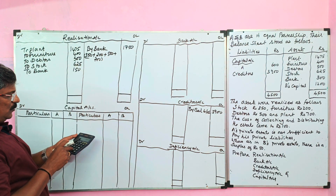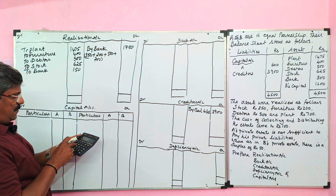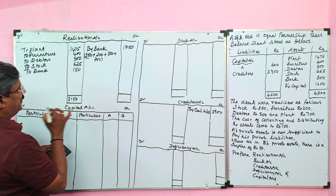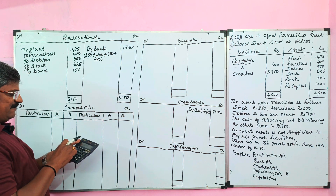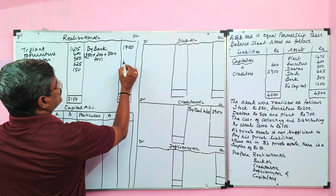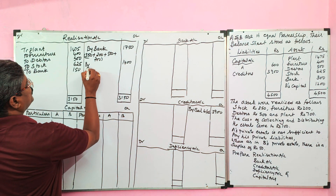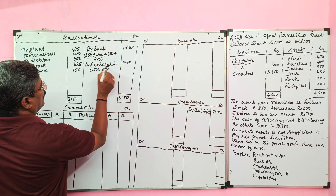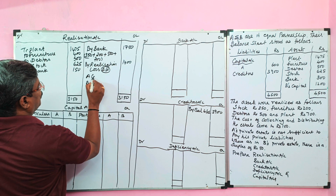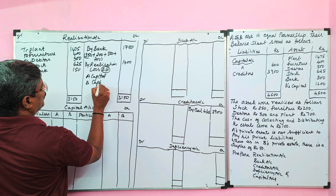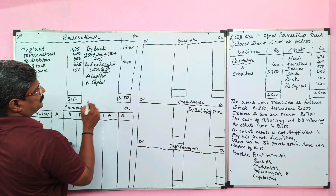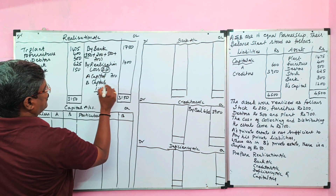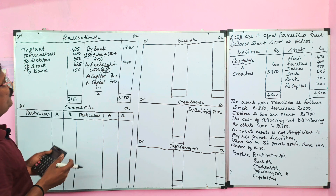Debit side of realization account: ₹1,475 + ₹400 + ₹500 + ₹625 + ₹150 = ₹3,150. Credit side (assets realized) = ₹1,750. So realization loss = ₹1,400. This loss is shared equally between A and B — ₹700 each debited to their respective capital accounts. Realization account is now prepared.